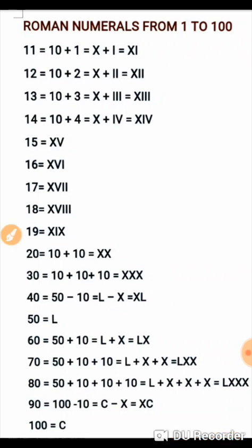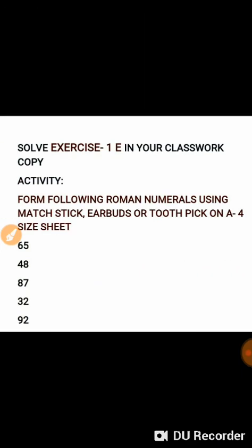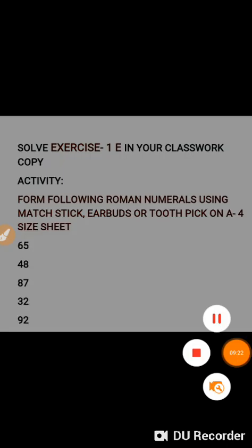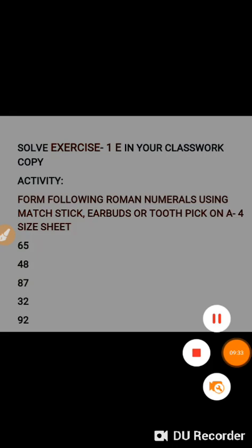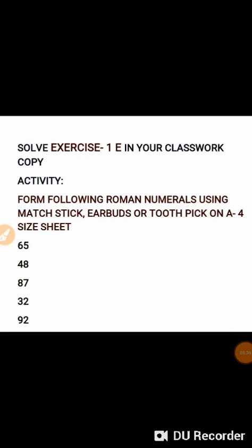Try forming these Roman numerals from 1 to 100 in your maths classwork copy, and solve exercise 1E in your classwork notebook. You have to perform an activity also — please take one A4 size sheet and collect some matchsticks, earbuds, or toothpicks, and stick these objects on the sheet to form the numbers 65, 48, 87, 32, and 92. Roman numerals are one of the earliest and most ancient number systems, so please enjoy forming them. Any doubts can be shared on my personal WhatsApp. Thanks.